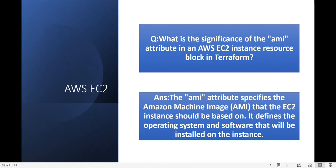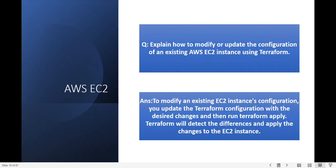Next question: how do you modify or update the configuration of an existing AWS instance using Terraform? If you want to modify an EC2 instance configuration using Terraform, you can run terraform apply. Terraform automatically detects the differences and applies the changes to the EC2 instance.